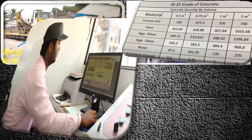In automatic batching, there is a person sitting in a control room. The system has the weights of materials required. For example, for M25 grade concrete to prepare one cubic meter: cement (ACC brand) — 370 kg; sand — 827.84 kg; 20 mm aggregate — 698 kg; 10 mm aggregate — 484 kg. Using two different sizes of aggregate results in well-graded concrete with fewer voids.